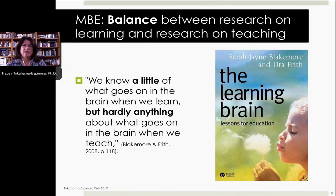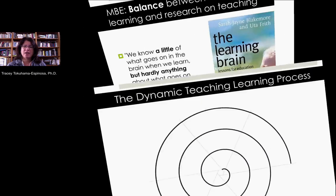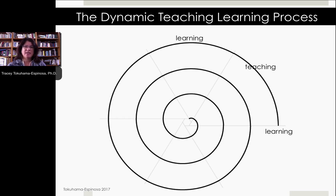This is really key, because as Sarah-Jane Blakemore and Uta Frith have pointed out, we know a little bit about how the human brain learns, and we know hardly anything about how we teach to take advantage of how the human brain learns. And it's not just what might occur in a lab, where you have a stimulus and then a response and think, okay, so we've taught something and it is actually learned.